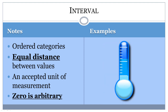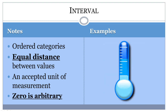Temperature, if measured in degrees Fahrenheit or Celsius, is another good example of interval measurement. On the Fahrenheit scale, the difference between a temperature of 37 degrees and 38 degrees is the same as the difference between 89 degrees and 90 degrees. The zero is arbitrary, since a temperature of 0 degrees does not mean that there is no temperature.